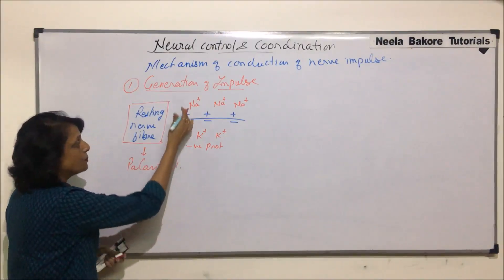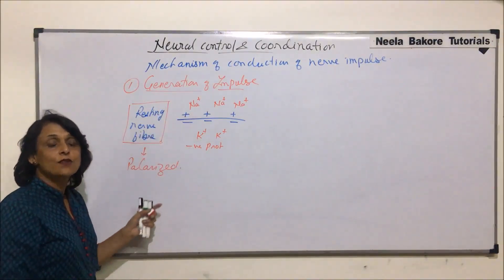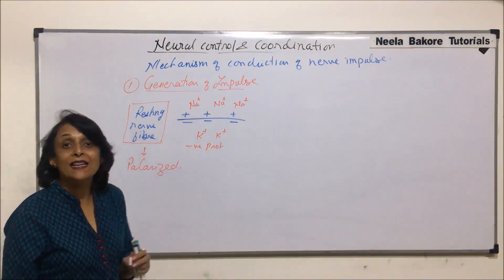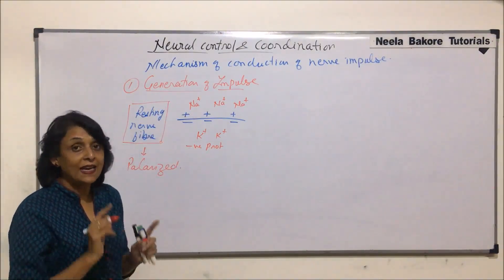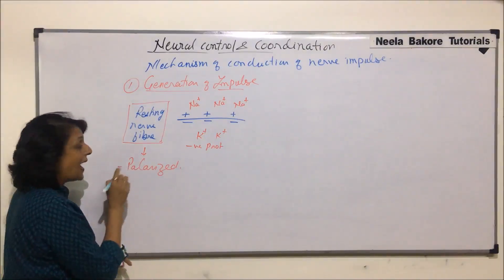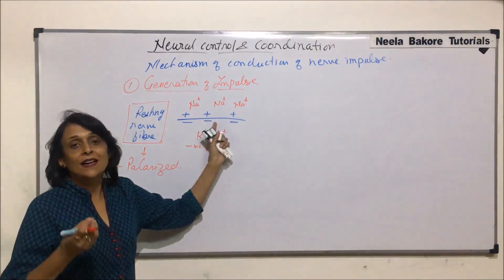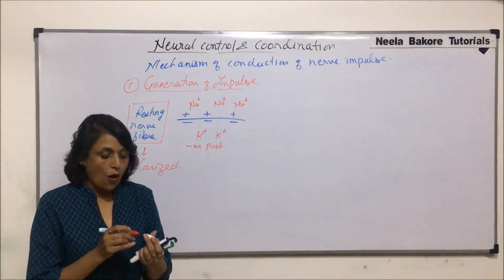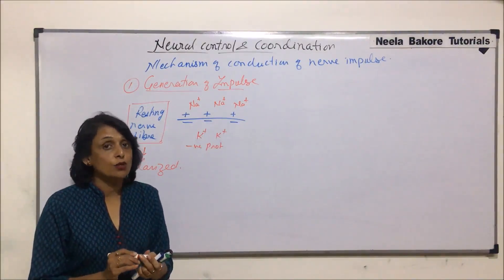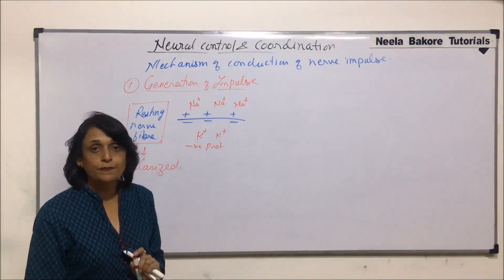The membrane has poles — positive and negative — so it is called a polarized membrane in the resting stage. At this stage, what is the condition of all those channels we talked of?